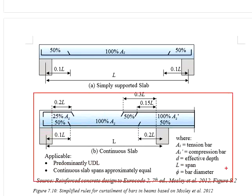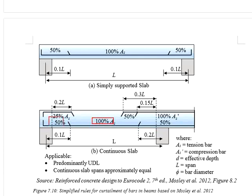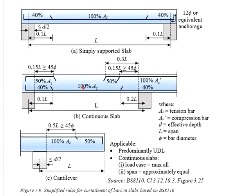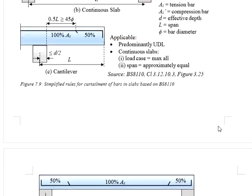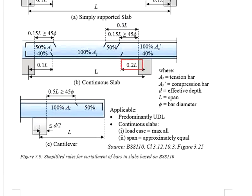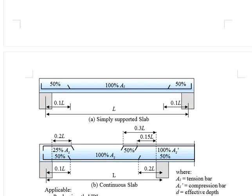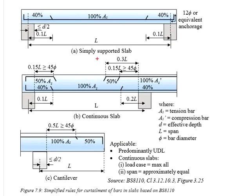As for the continuous slab, the bottom reinforcement comparison is similar: 100% bottom steel bar, but 50% towards the support per the reference, compared to 40% per British Standard. The locations of curtailment are the same — 0.2 times and 0.1 times the effective length. The top reinforcement bar arrangement is the same: 100% at the support and 50% curtailed at the same locations as per the British Standard.